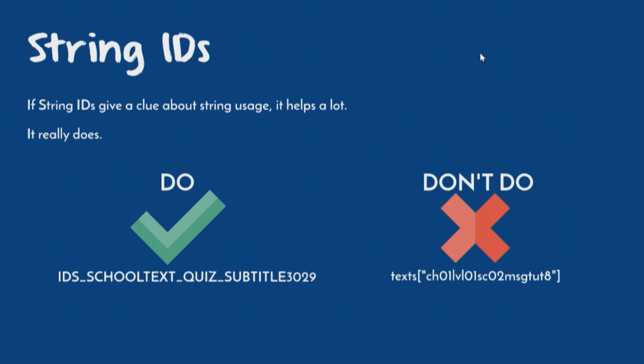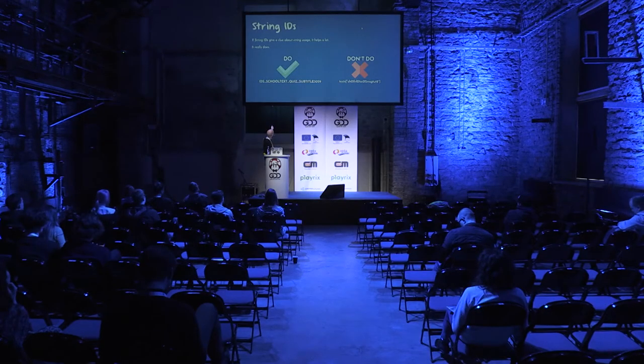On the left, you can see an example where we can see that it is text used in a quiz and it is a subtitle — quite good context, and the translator can understand where it is basically used. On the right, we see a string ID that was done automatically, made out of a hash. As you can understand, very little information can be taken from such a type of string ID.